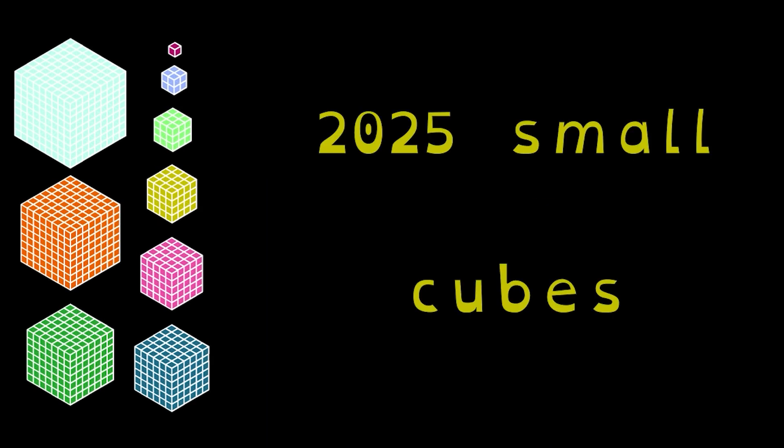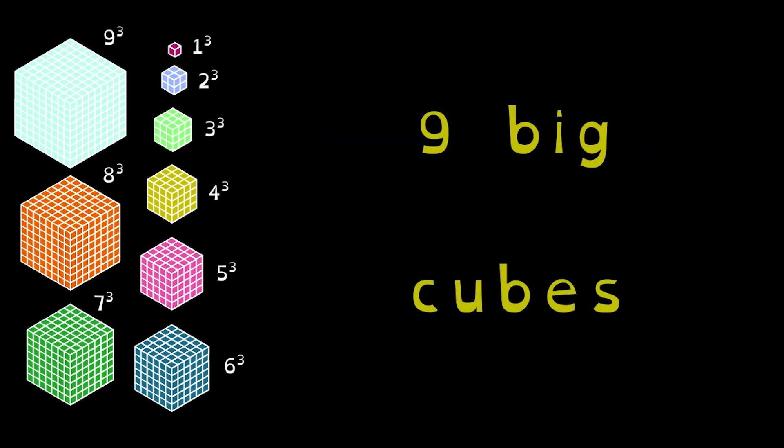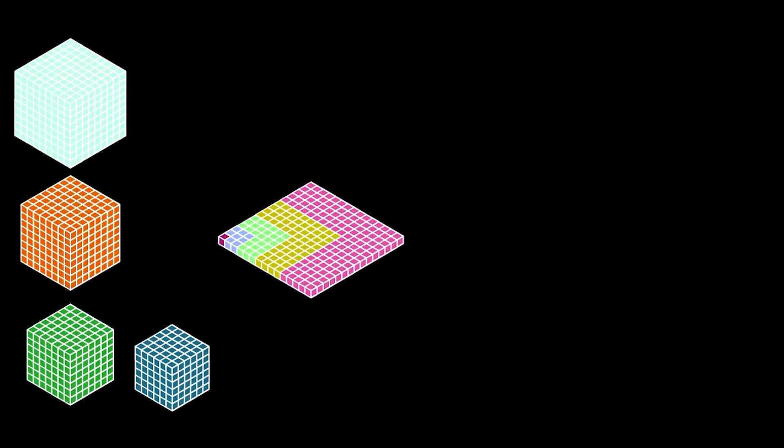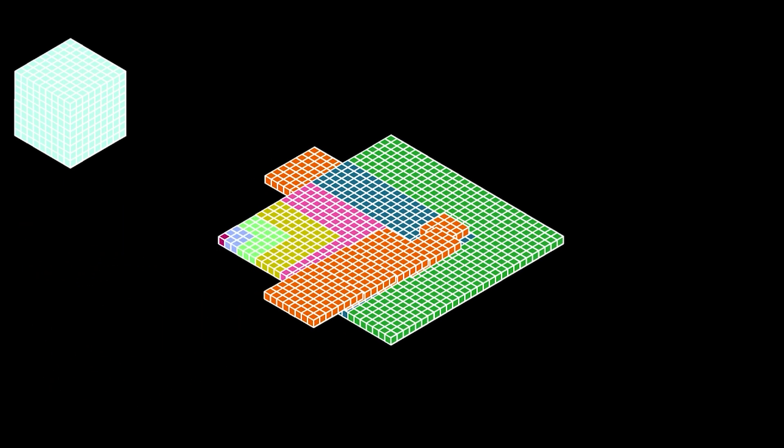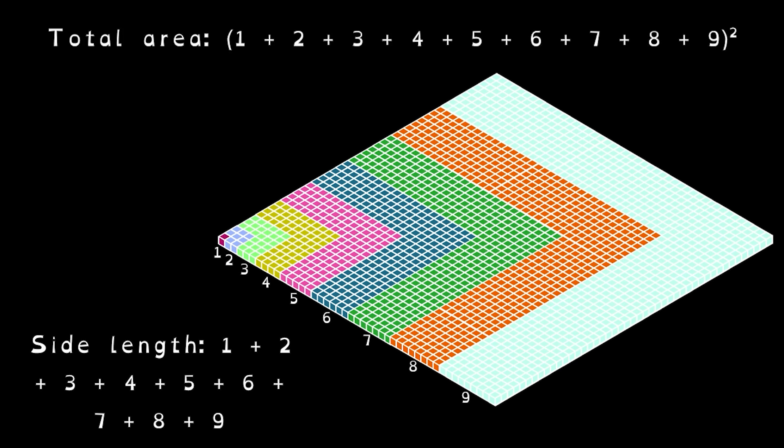Now let's consider something a bit bigger. Here we have 2,025 small cubes grouped together into 9 big cubes, namely 1 cubed plus 2 cubed plus 3 cubed, and so on until 9 cubed. And, well, I'll let the animation play out. So, I've again formed a square. The side length of this square is 1 plus 2 plus 3, and so on until 9. Thus, the total area is 1 plus 2 plus 3, and so on until 9 squared.